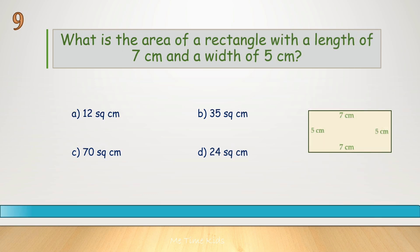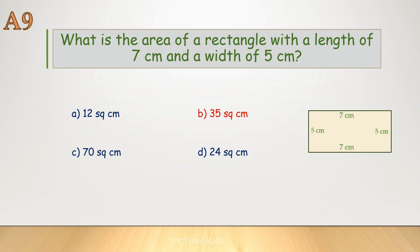What is the area of a rectangle with a length of 7 centimeters and a width of 5 centimeters? Correct answer is B, 35 square centimeters.